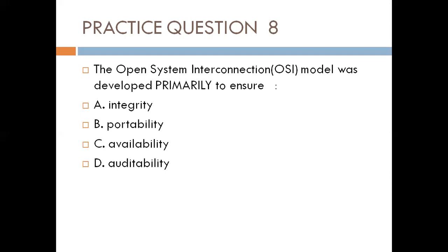Question eight. The Open Systems Interconnection model was developed primarily to ensure: A. Integrity, B. Portability, C. Availability, D. Auditability. The OSI model was developed to ensure that network devices can be portable, have environmental independence, and be used across proprietary manufacturers. Before OSI, network devices made by manufacturer A could not connect with devices made by manufacturer B. The OSI model standardized this so all devices use the same layers, giving you interoperability — which is similar to portability and environmental independence. So the best answer is B, portability.